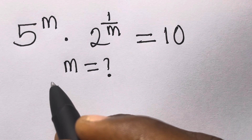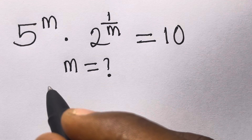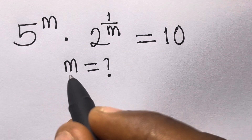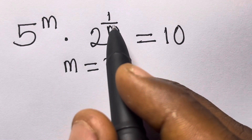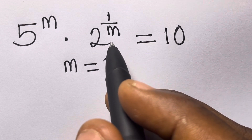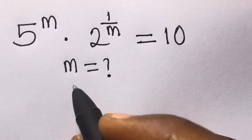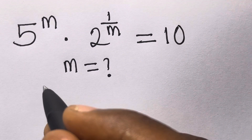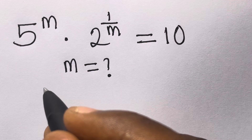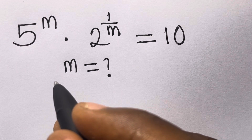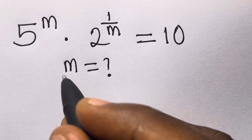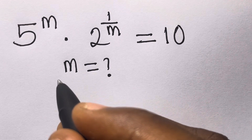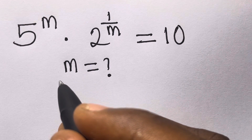Hi guys, welcome to Mathematics. In this video we want to solve for m in 5 raised to the power m times 2 raised to the power 1 divided by m equals 10. Can you solve this before I do? You can just solve it and drop your answer in the comment section.